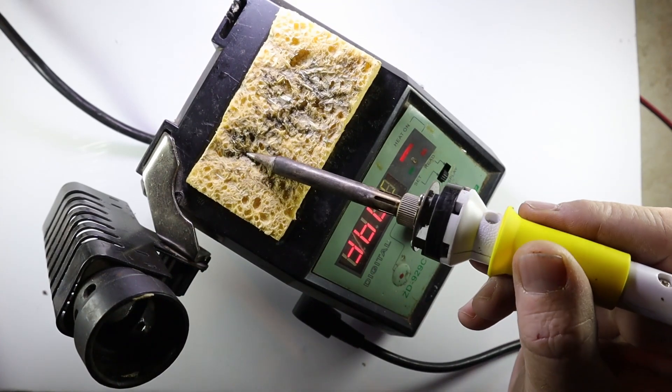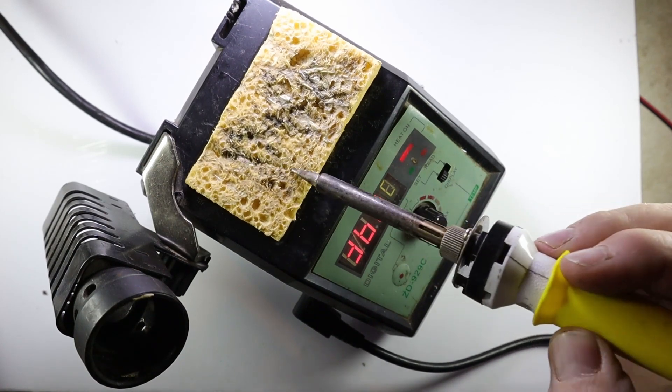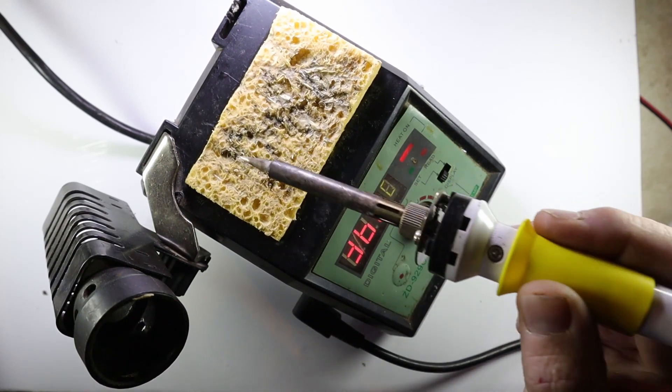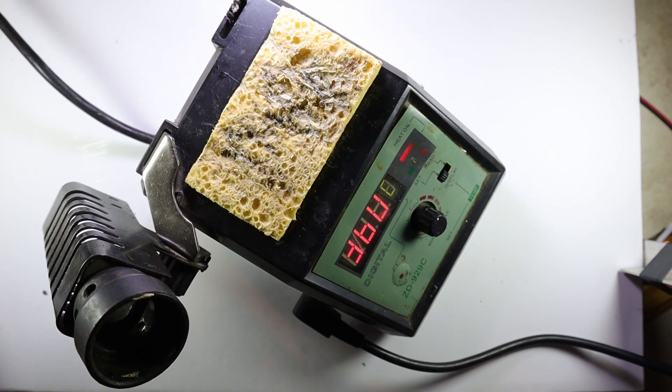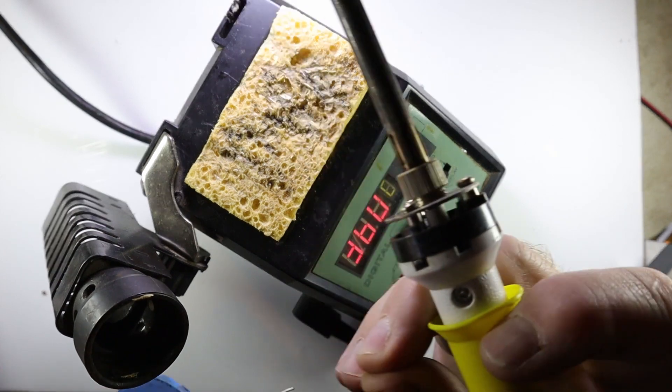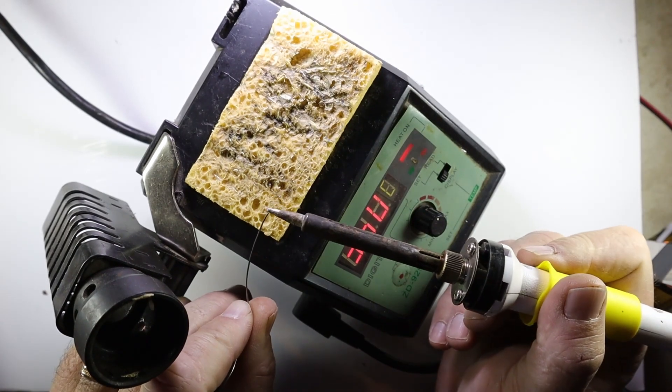A soldering station will really help you because with the normal irons where you can't see the temperature, it's very difficult to set it correctly and it's in most cases either too hot or too cold.